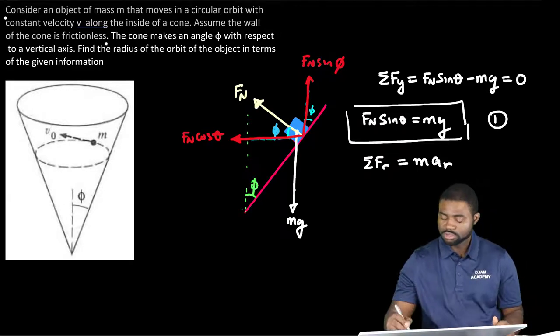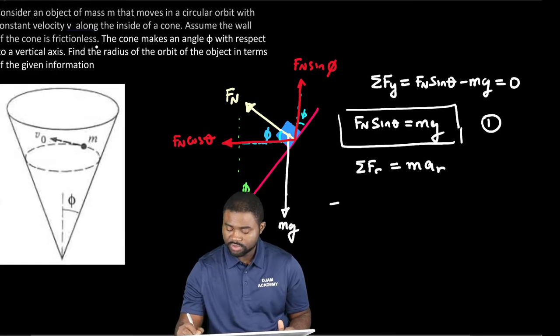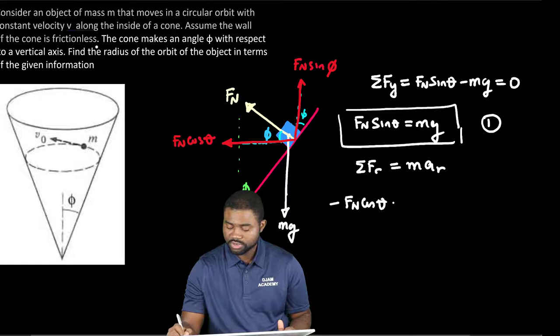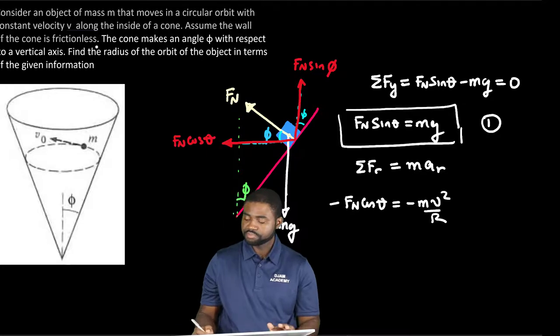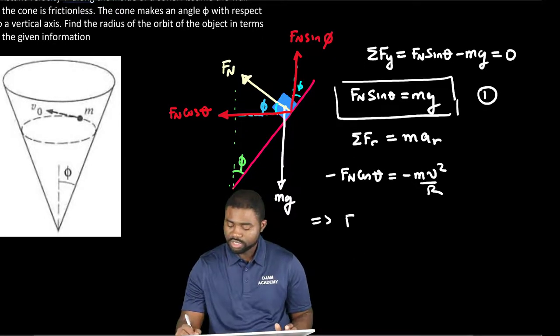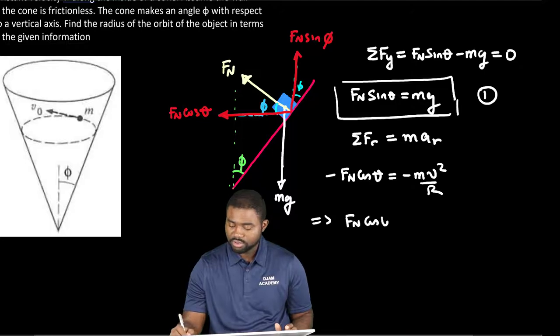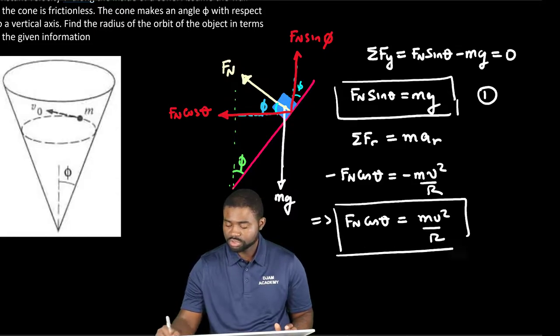So we now have negative FN cosine theta equal to negative m v squared all divided by r. This would mean that FN cosine theta is equal to m v squared over r. Let's call this equation 2.